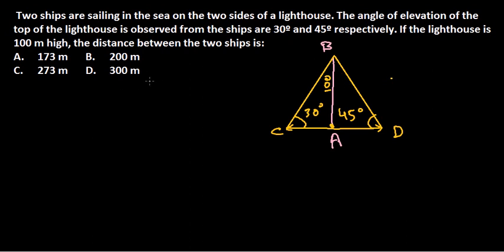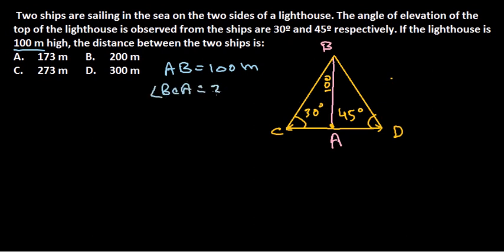The different values we have: AB, which is the length of the lighthouse, is 100 meters. The angle BCA is 30 degrees, and the angle BDA is 45 degrees. These are the given values.